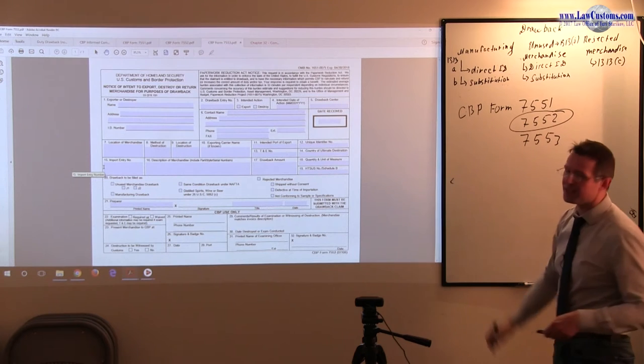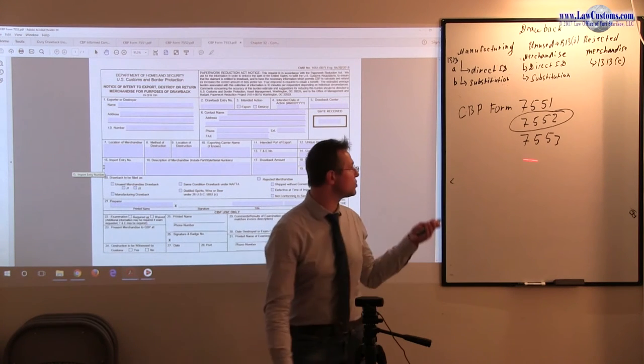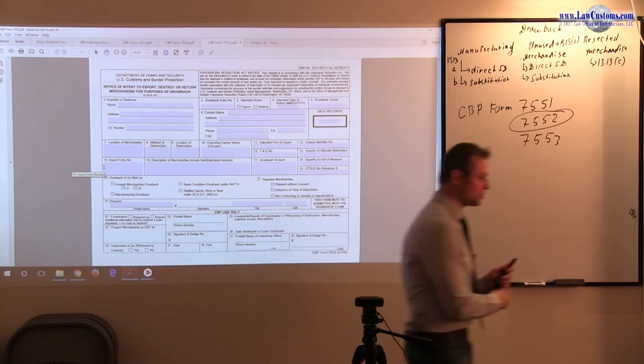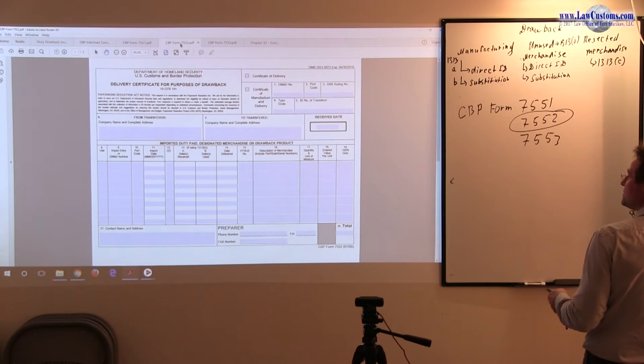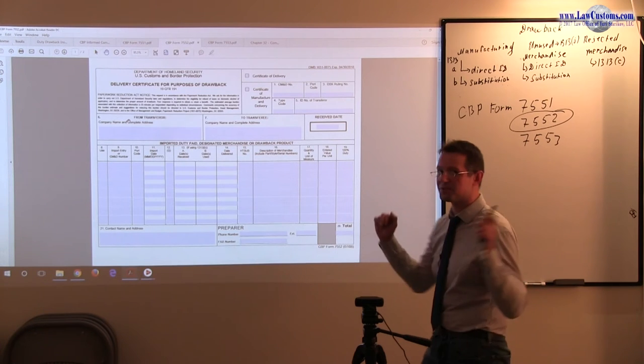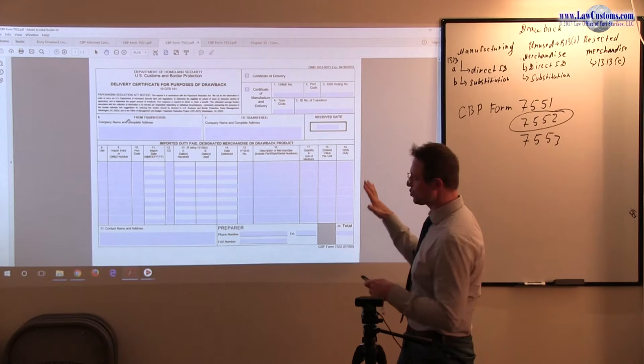This form is becoming less relevant after the Trade Enforcement and Trade Facilitation Act, because this form traces the Certificate of Manufacturing Delivery, traces the chain of custody of the product. Every time there is a transfer, and transfer is a buzzword here as we will see, you have to document this.